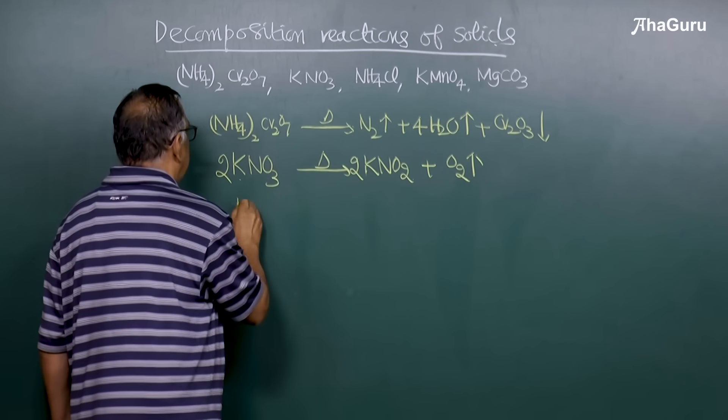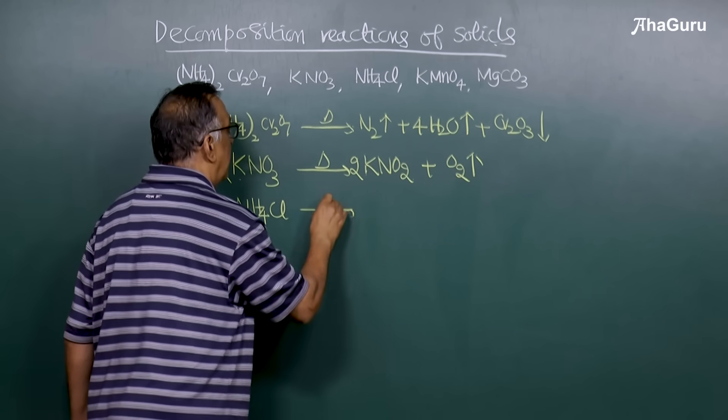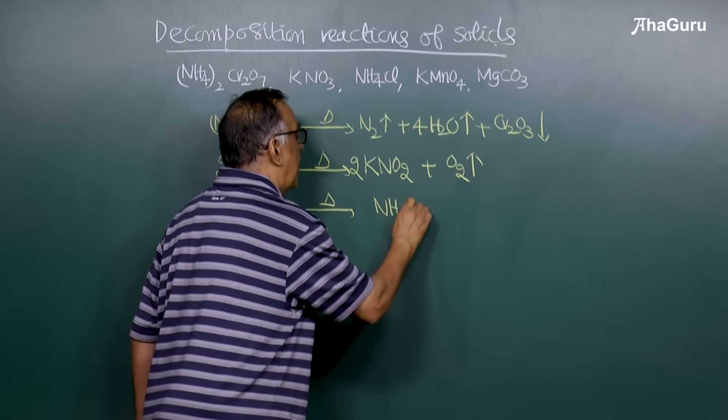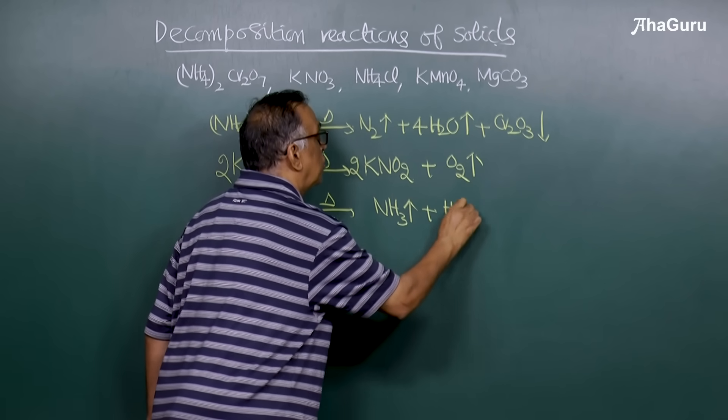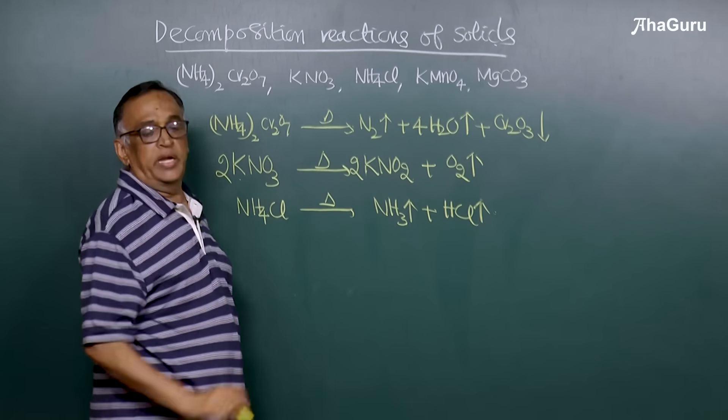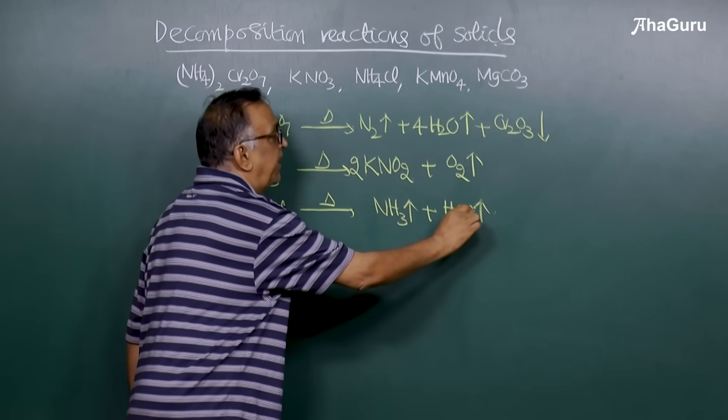If I take ammonium chloride solid, on heating it forms ammonia and HCl, both escape as vapors. This solid on heating leaves no residue because both products are volatile.